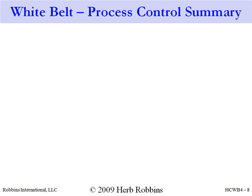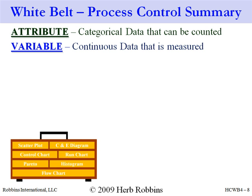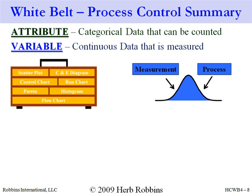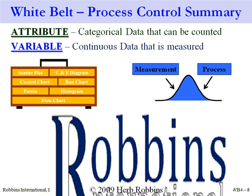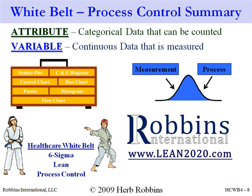Congratulations on completing this part of your healthcare white belt. Let's briefly review what you've learned. Attributes and variables — two types of data. One we count and fits nicely into categories; the other we measure and is continuous. You've briefly seen the seven quality tools which are used to analyze data using visual representations. Also, think about the sources of variation — you'll need to understand where the major sources are coming from to reduce the overall variation in your system. I encourage you to share our website with others and consider attending one of our higher level belt programs to further your understanding of these tools. Good luck with completing your healthcare white belt.